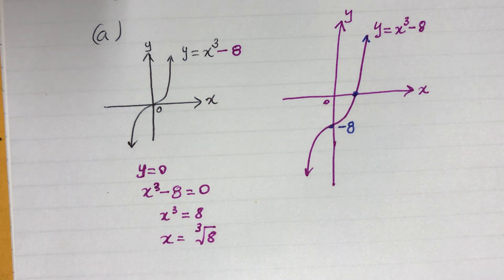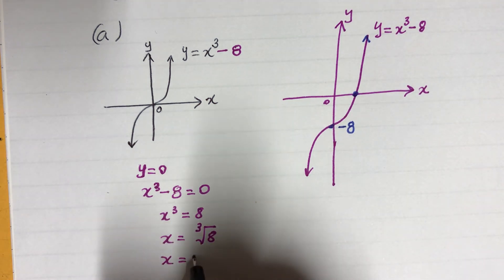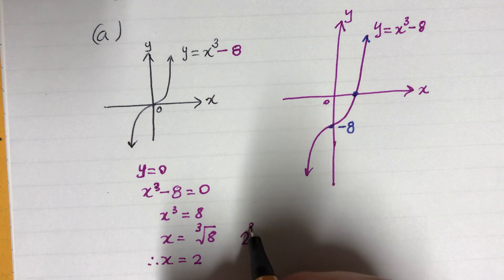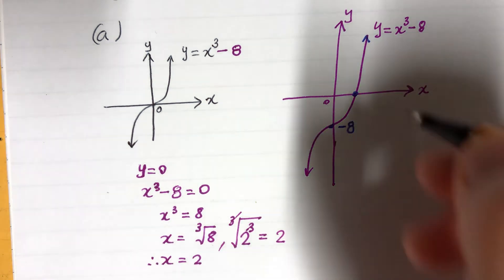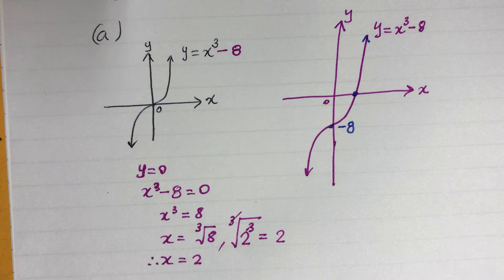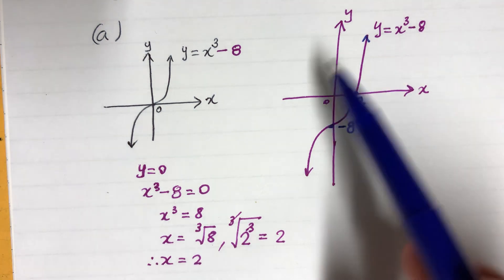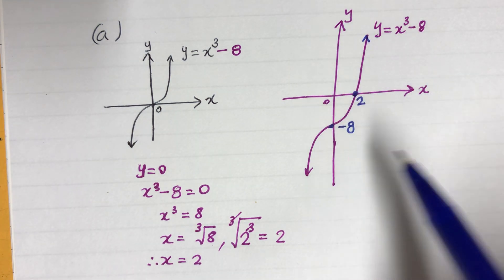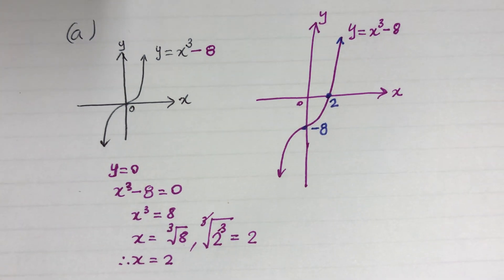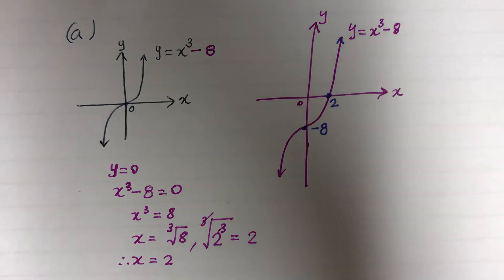X equals the cubic root of 8, which is 2, because 8 is 2 to the power of 3. If I do the cubic root on that, I'm left with 2. So the x-intercept is 2. That's how I sketched it. Hopefully you will do a better graph than I just did.